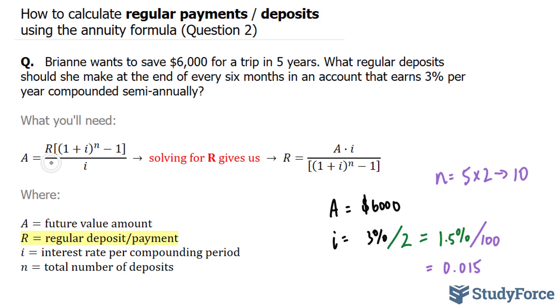we have to solve for R. R represents the regular deposits or payments. Now, you can use this formula or you can use this formula, which already has R solved. It's up to you which one you want to memorize, but it's always best to memorize this and then solve for R manually. So that's what I'll do in this video.